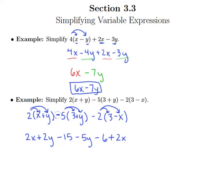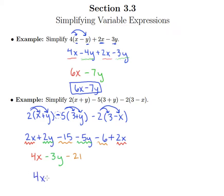Now let's look at our like terms. 2x and 2x combine to make 4x. Then 2y and minus 5y combine to make negative 3y, so we put minus 3y. For the constants, negative 15 minus 6 is negative 15 plus negative 6, which is negative 21. So our final answer is 4x minus 3y minus 21.